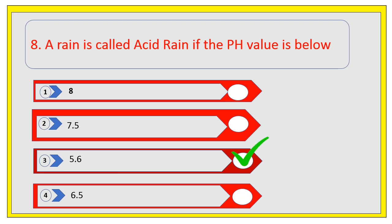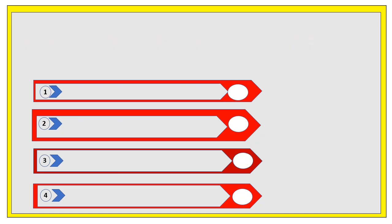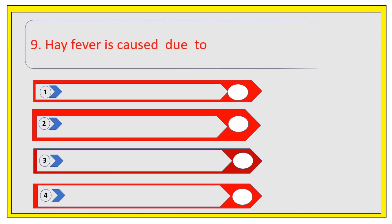The right answer is 5.6%. Hay fever is caused due to. Options are dengue, allergy, helper T cell, and heptosis. The right answer is allergy.